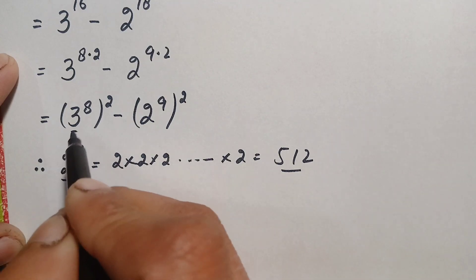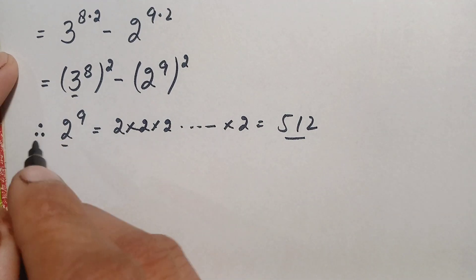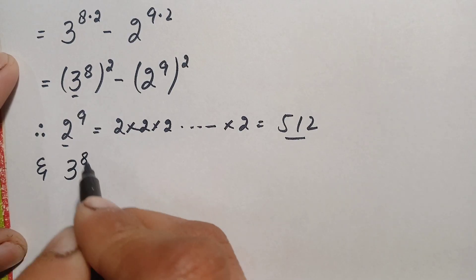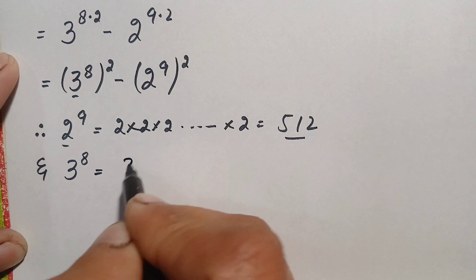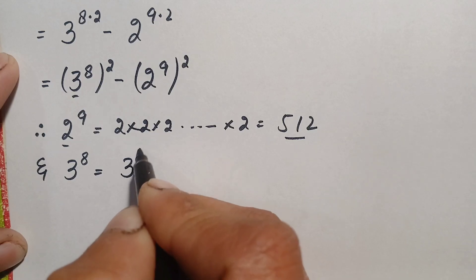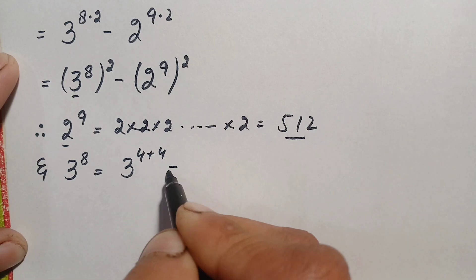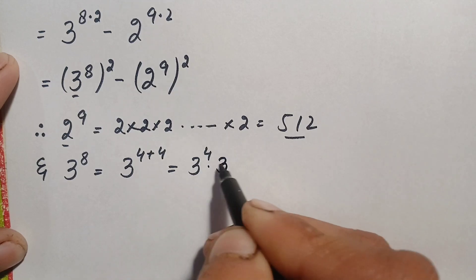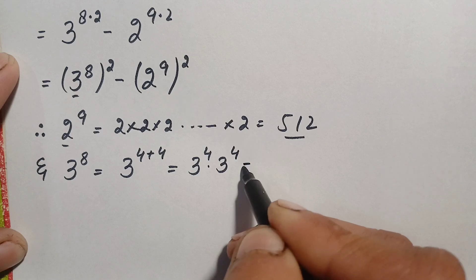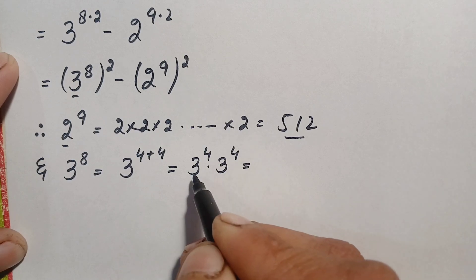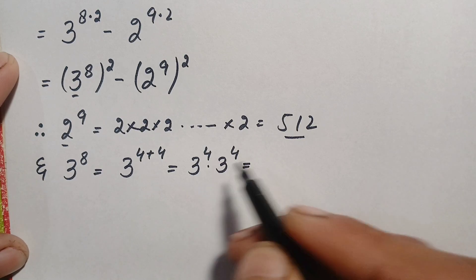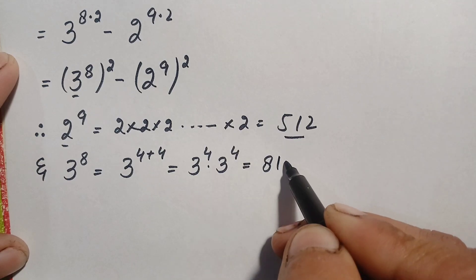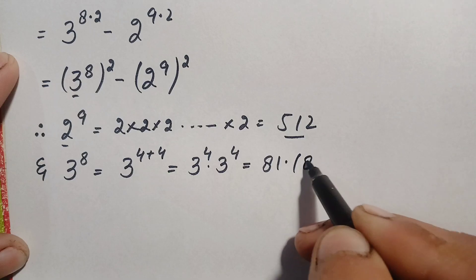Now we will find the value of 3 raised to power 8. We can write 3^8 as 3^4 times 3^4, since 4 plus 4 equals 8, using the exponential identity. Now 3^4 is simply 3 times 3 is 9, 9 times 3 is 27, and 27 times 3 is 81. So 3^4 is 81, and 3^8 is 81 times 81.